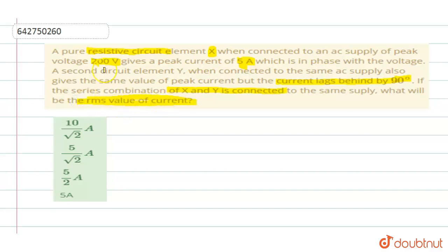So here they are talking about two different circuits. One is a pure resistive circuit element, means only a resistor when it is connected to an AC. It is giving a voltage of 200V and it produces a current of 5A. Since it is a resistive circuit, the voltage and current will be in phase. Now the second circuit element Y is connected to the same supply and it gives the same value of peak current. So peak current in both cases remains same. It is I0 which is equal to 5A.